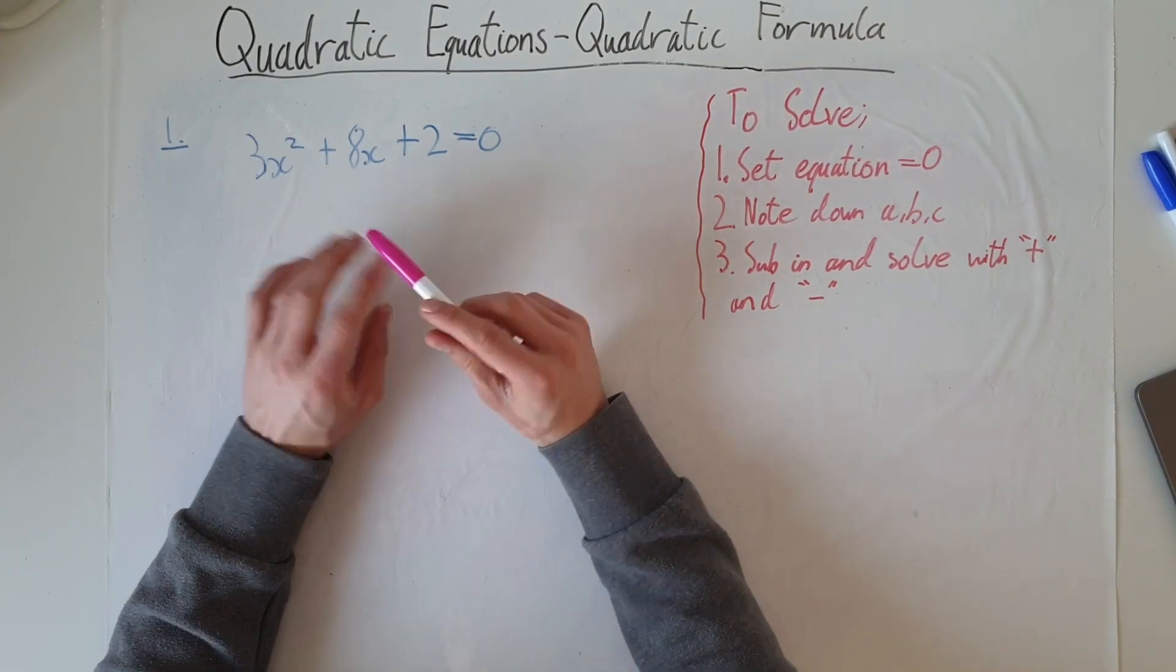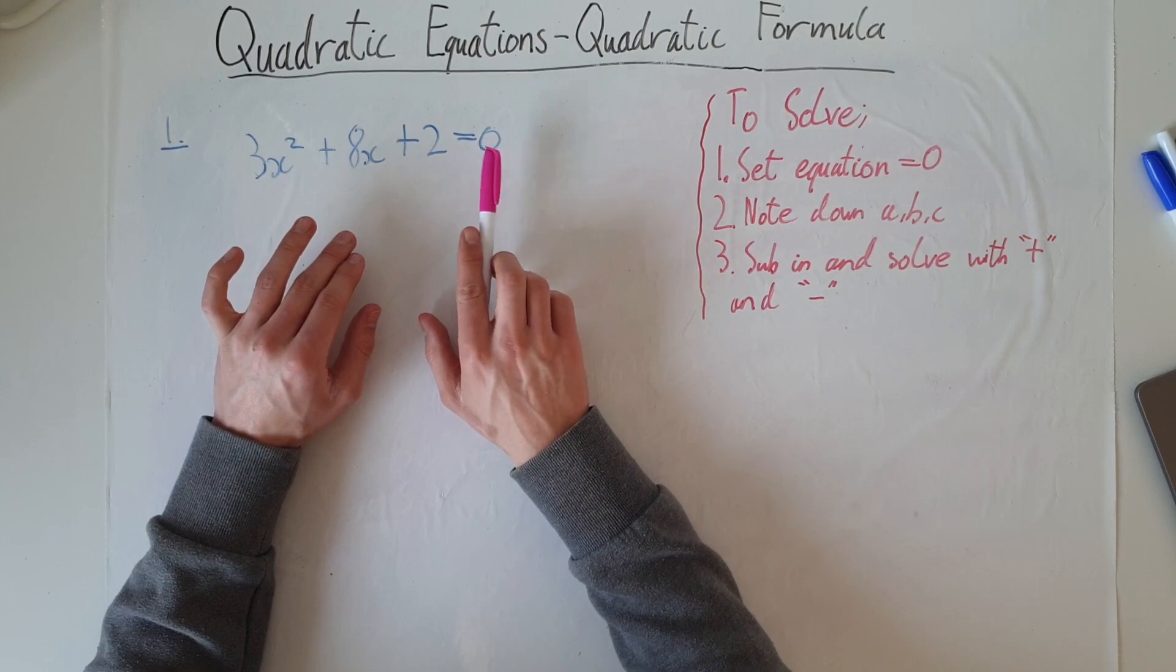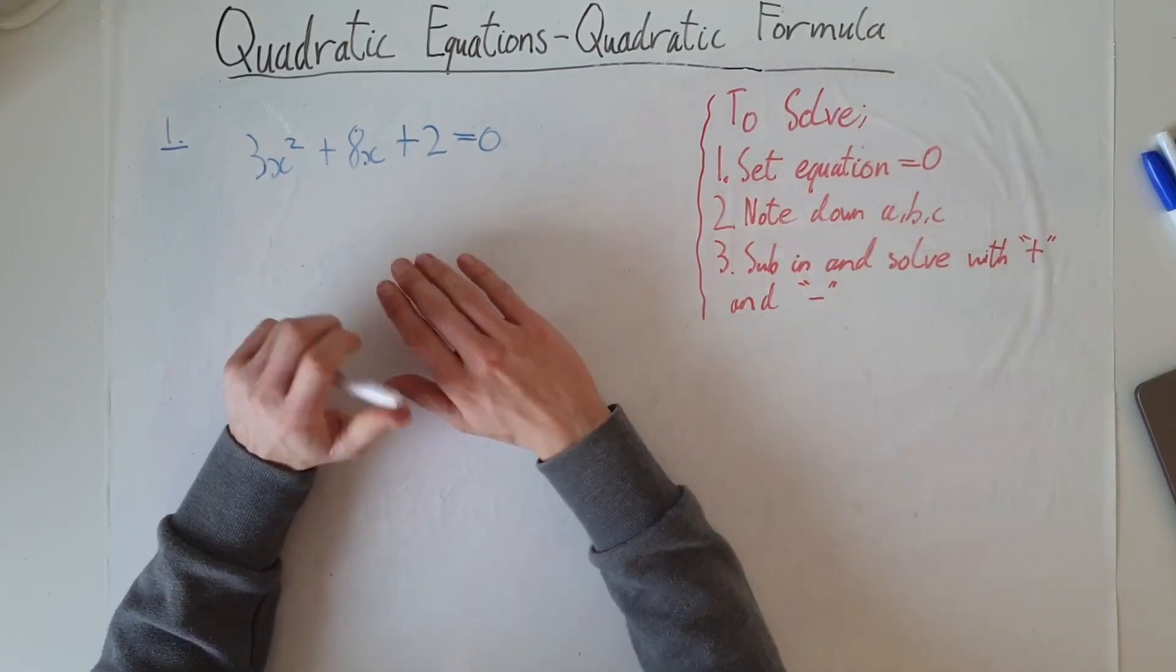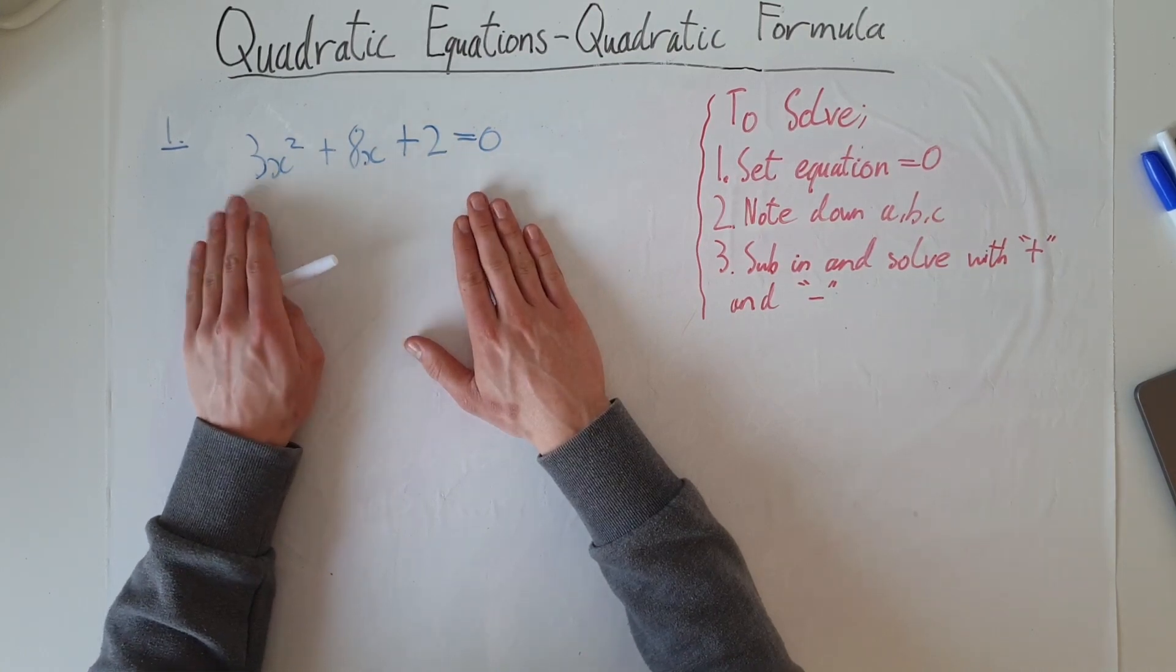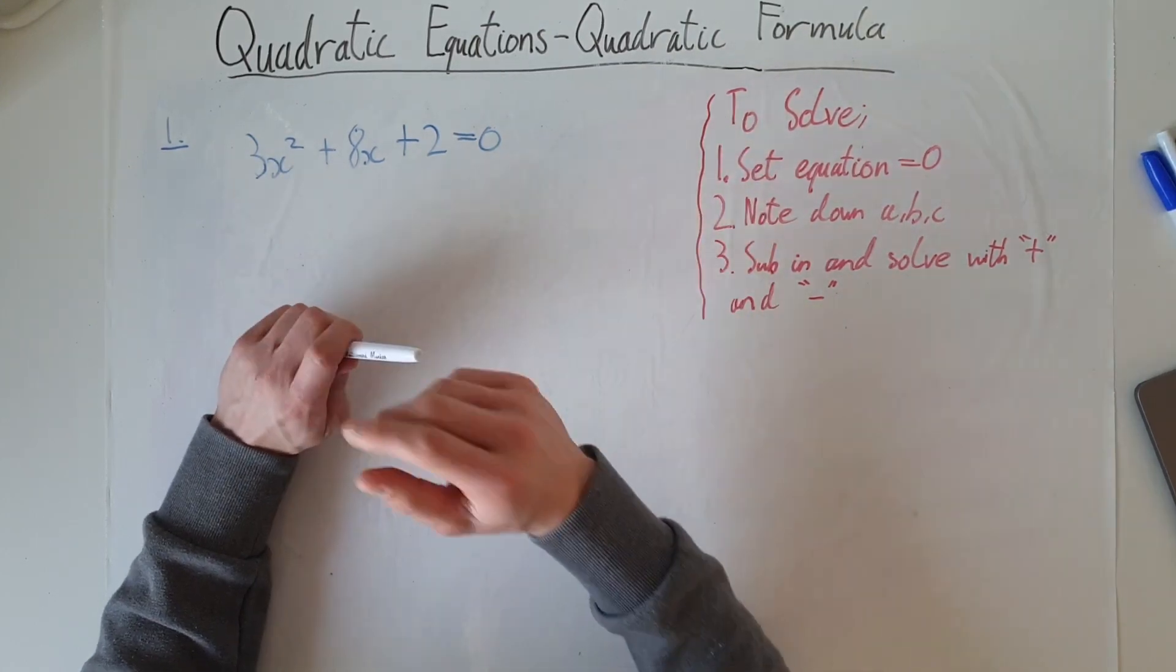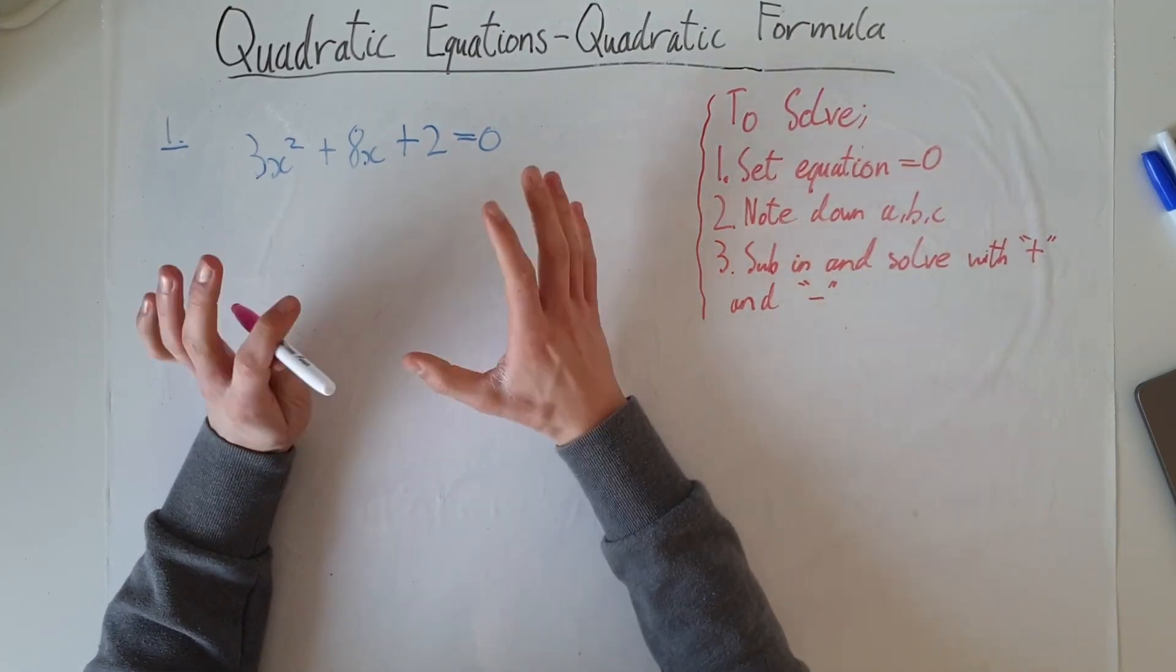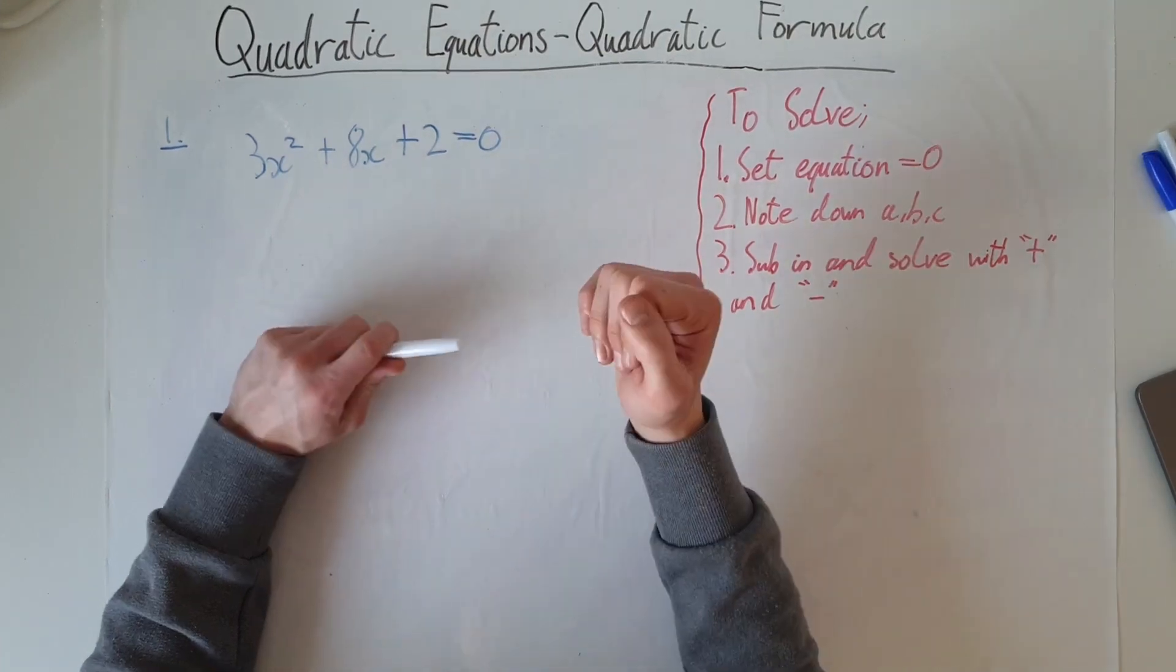Okay, so look at our first example: 3x² + 8x + 2 = 0. Now just as a quick side note on deciding whether you would use the algebraic way of solving it, like factoring the trinomial, or the quadratic formula which we're learning now - I'll teach you how to decide between that in the next lesson. So for now, just worry about practicing the quadratic formula.